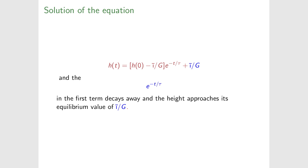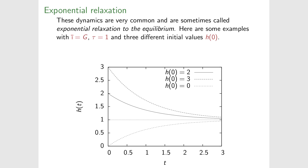Here are some examples. I-bar has been chosen equal to G so the equilibrium value is one, and tau equals one. Starting at two or three, h falls towards the equilibrium; starting at zero, it rises towards it. Those starting further away fall faster initially. This matches our intuition: h moves toward the equilibrium value, with speed proportional to distance from it.